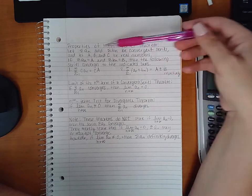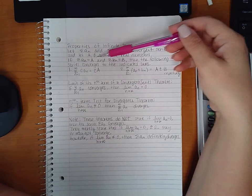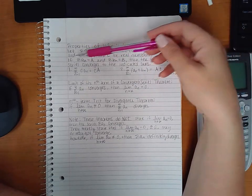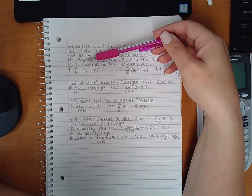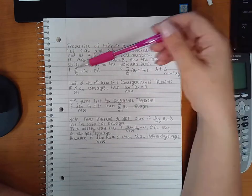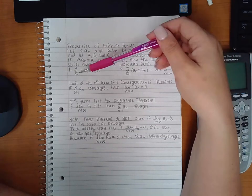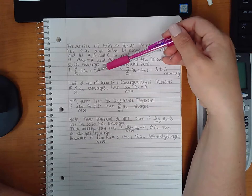So if you have two infinite series and both of them are convergent, and a, b, and c are real numbers, if the sum of the first series is a and the sum of the second series is b, then the following series converges to the indicated sums.